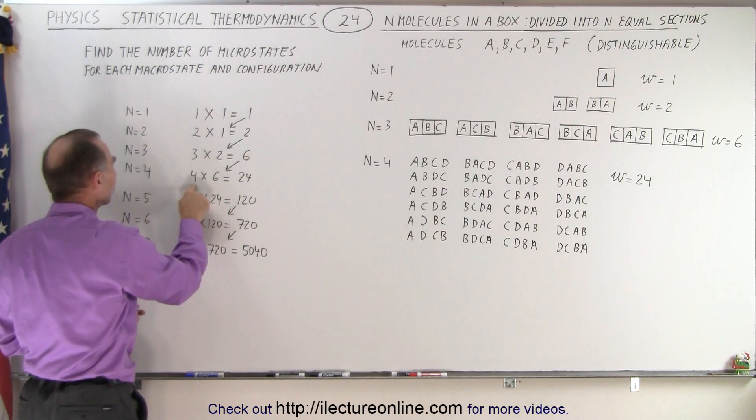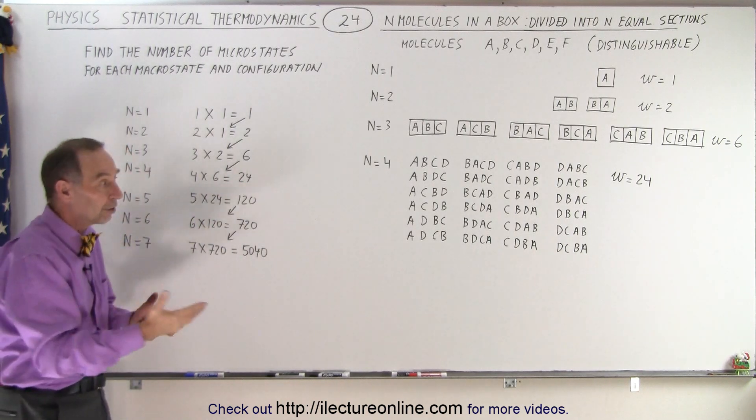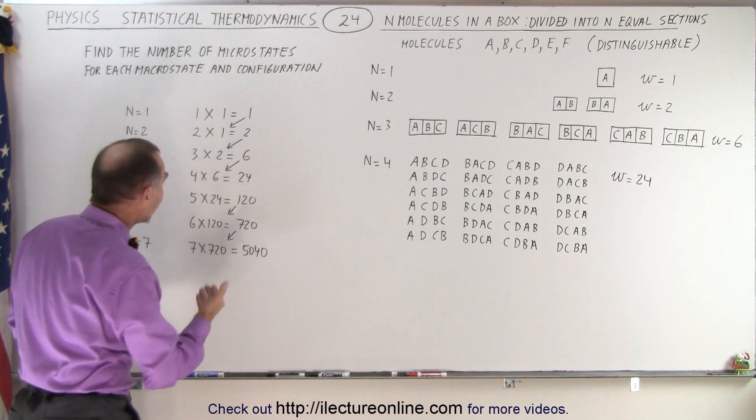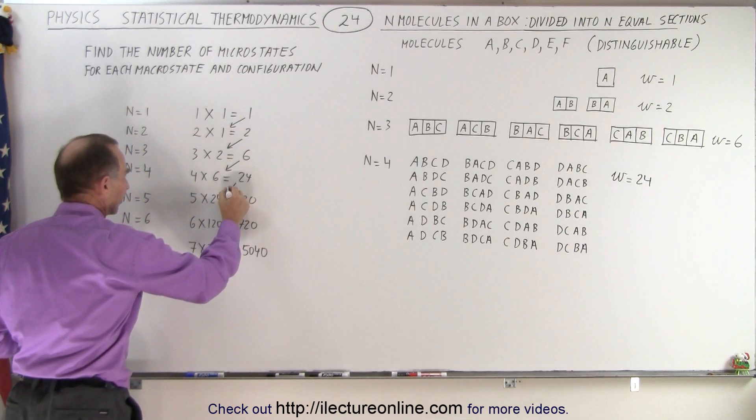Bring the 6 down here. Now n equals 4. 4 times 6 is 24. So now there's 24 possible microstates, as we showed, in the case with four molecules and four partitions. I forgot to put the arrow down.